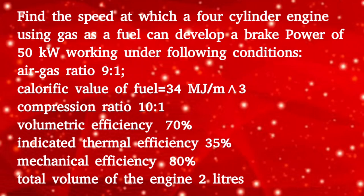Given question: find the speed at which a 4-cylinder engine using gas as fuel develops a brake power of 50 kW, working under the following conditions — air to gas ratio 9:1, calorific value of fuel 34 MJ per meter cube, compression ratio 10:1, volumetric efficiency 70%, indicated thermal efficiency 35%, mechanical efficiency 80%, and total volume of the engine 2 liters.